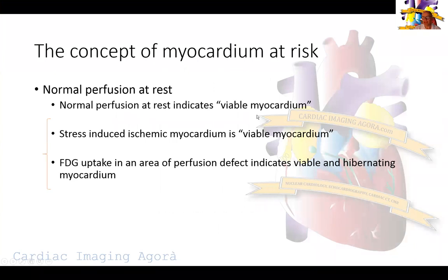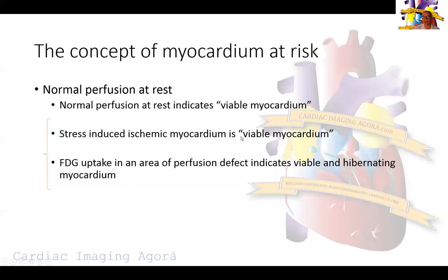Starting with some basic foundation: I always think about myocardium in the context of myocardium at risk. Normal perfusion at risk indicates viable myocardium — that situation does not really require FDG to identify myocardium at risk. It might indicate we need a stress study to check for ischemia, but normal perfusion at risk is by definition viable myocardium that is being perfused. Stress-induced ischemia is also viable myocardium, so that would not require FDG either to identify viability, because by definition there is ischemia and therefore the myocardium was viable at risk.